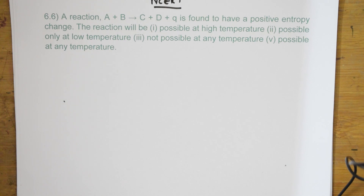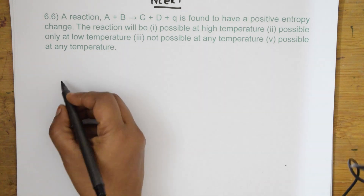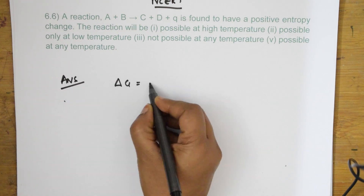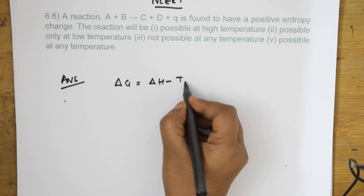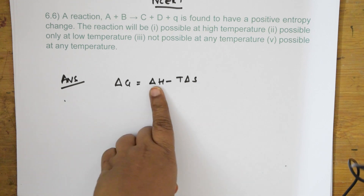Whenever a reaction has to be spontaneous, what should you remember? Delta G, the Gibbs free energy, should be negative — that's important. The question gives a positive entropy change, and to speak about spontaneity, the formula we write is: ΔG = ΔH − TΔS.